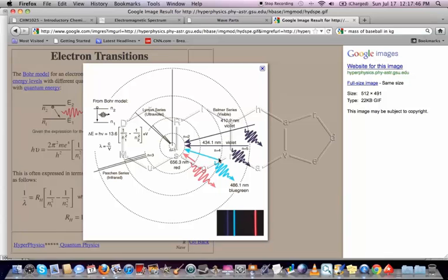The transition from n equals 4 to n equals 2 comes out with a blue transition, which is 486.1 nanometers. And then the n equals 5 down to n equals 2 comes out with a purple or violet wavelength. It's only the transitions down to n equals 2 that are actually in the visible region.